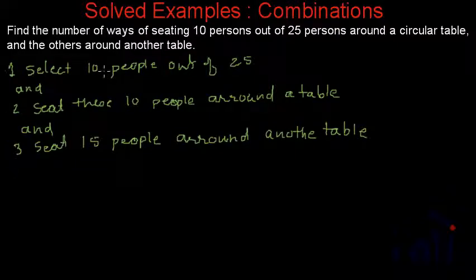So the first is select 10 people out of 25. The number of ways in which we can select 10 people out of 25 is 25C10.